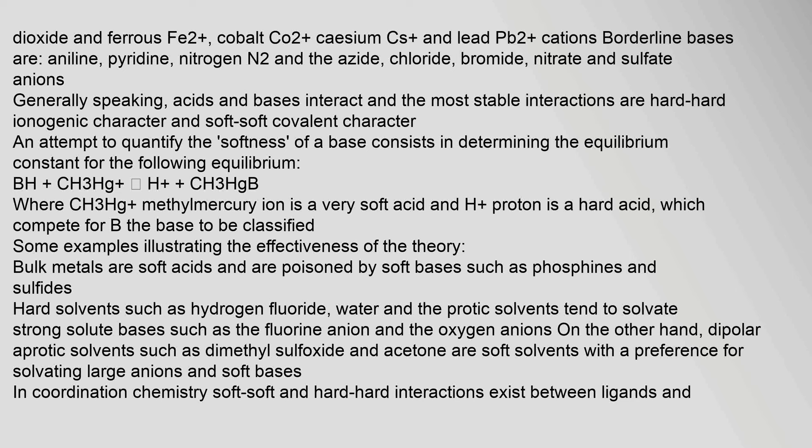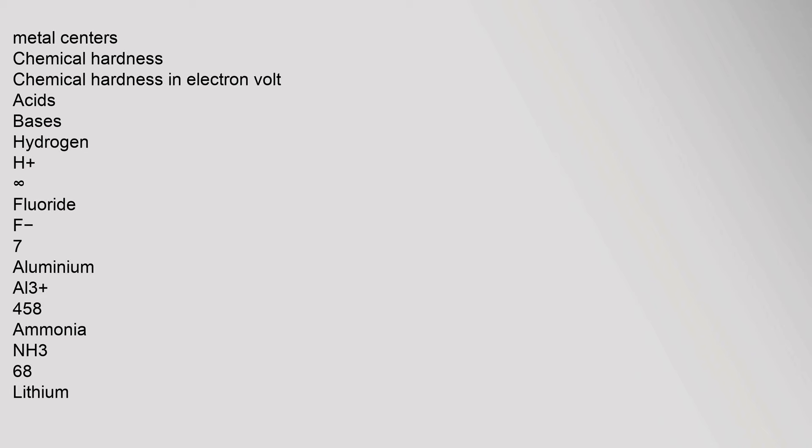Some examples illustrating the effectiveness of the theory: bulk metals are soft acids and are poisoned by soft bases such as phosphines and sulfides. Hard solvents such as hydrogen fluoride, water, and protic solvents tend to solvate strong solute bases such as the fluoride anion and oxygen anions. On the other hand, dipolar aprotic solvents such as dimethyl sulfoxide and acetone are soft solvents with a preference for solvating large anions and soft bases. In coordination chemistry, soft-soft and hard-hard interactions exist between ligands and metal centers.